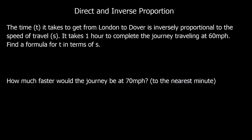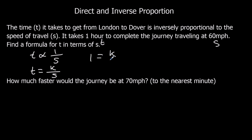Here's another question. The time it takes is inversely proportional to the speed. So T is proportional to 1 over S, meaning T equals K divided by S. It takes 1 hour when speed is 60 miles per hour. Substituting in: 1 equals K over 60, so multiplying both sides by 60 gives K equals 60. The formula is T equals 60 over S.